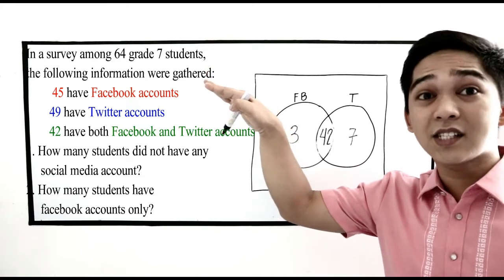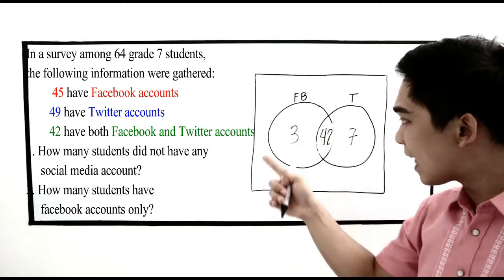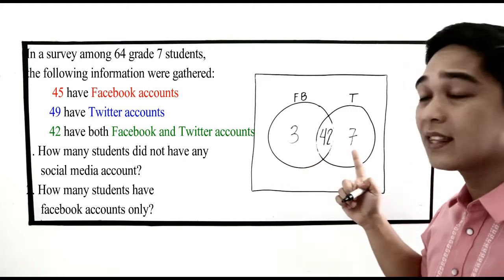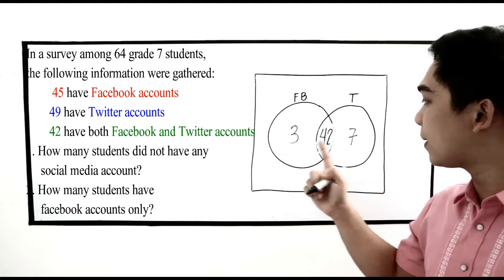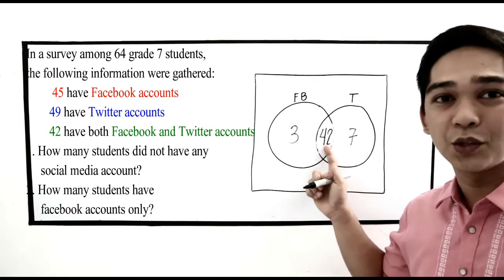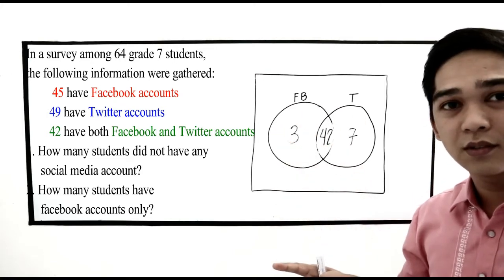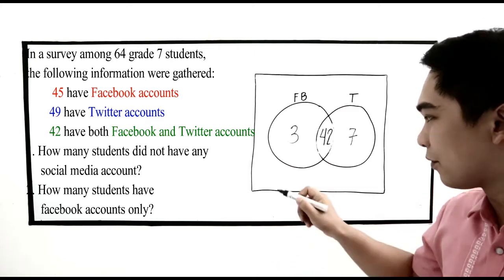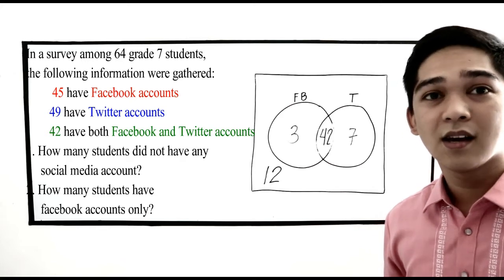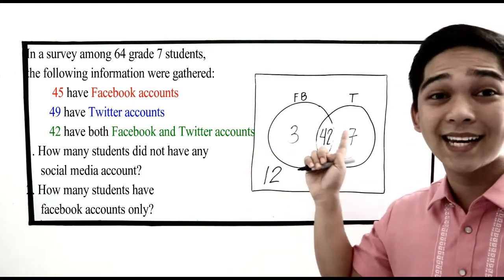64 grade 7 students were surveyed, so the total in our diagram should be 64. We add up the students: 3 plus 7 is 10, plus 42 is 52. So 64 minus 52 equals 12. The 12 is placed outside the circles — these are the students who have neither a Facebook account nor a Twitter account.